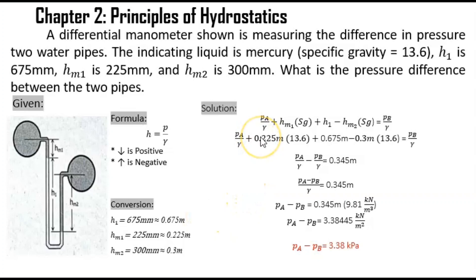After converting our given values to meters, we can now proceed in identifying our equation based on the given figure. Let's assume this pipe is pipe A and the other is pipe B. As we start from A all the way to B: hm1 is going downward, so it is positive; h1 is also going downward, so it is also positive. The segments with the same height and same type of fluid experiencing the same pressure level cancel out by Pascal's Law.